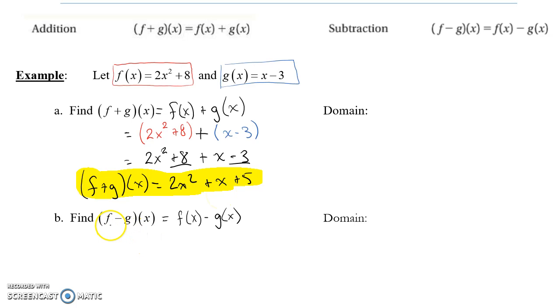Now, for the subtraction, f minus g of x, which is the same as f of x minus g of x, two different ways of writing this. The only difference is that we're subtracting, but that's a huge difference, because now when I take my first function f of x, which is still 2x squared plus 8, and I subtract my function g of x, which is x minus 3.